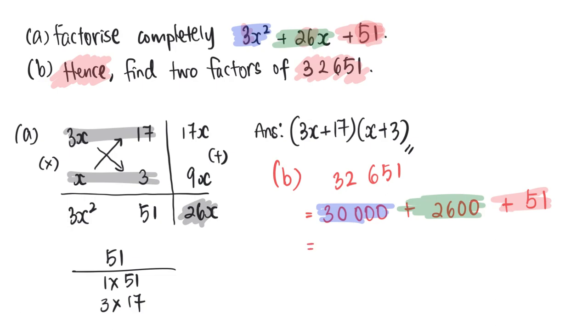And so for 30,000, I could rewrite it as 3 times 10,000. 2,600 I can rewrite it as 26 times 100.